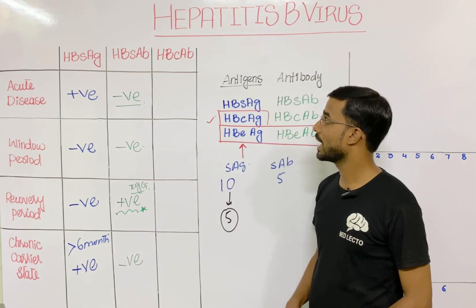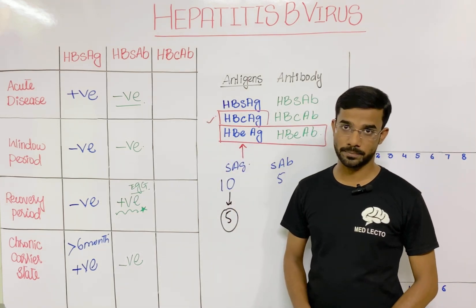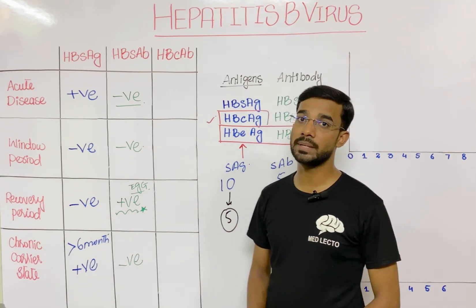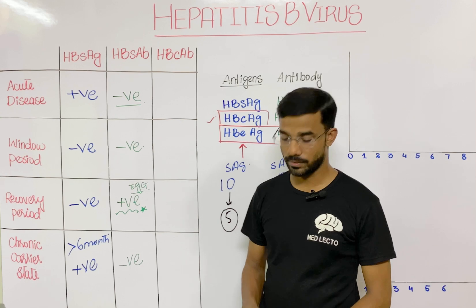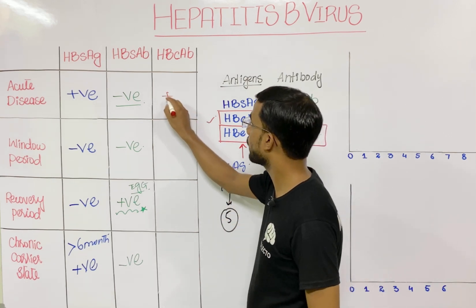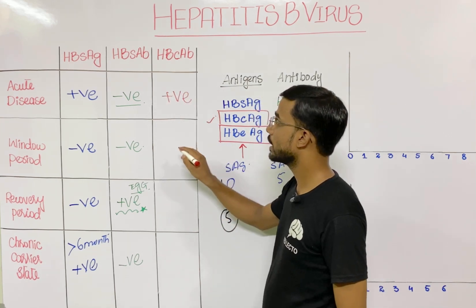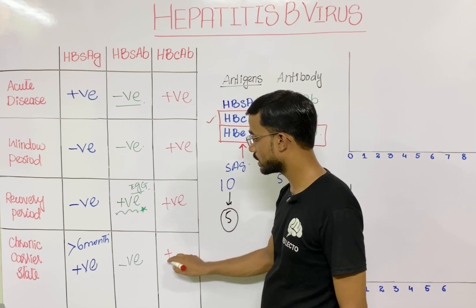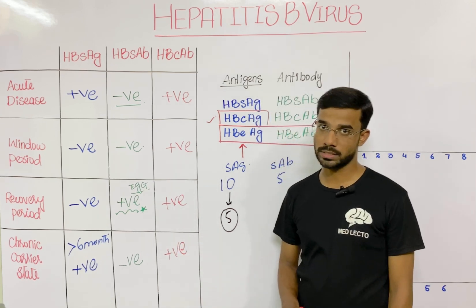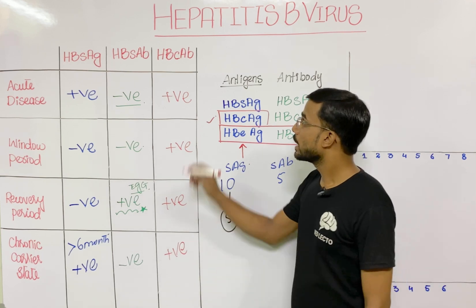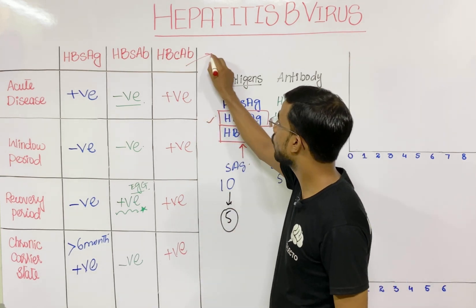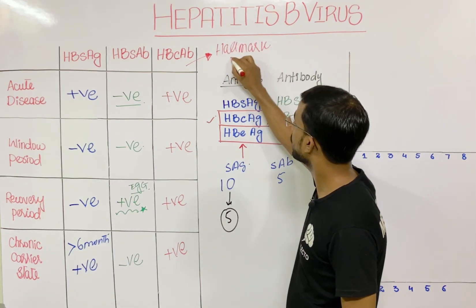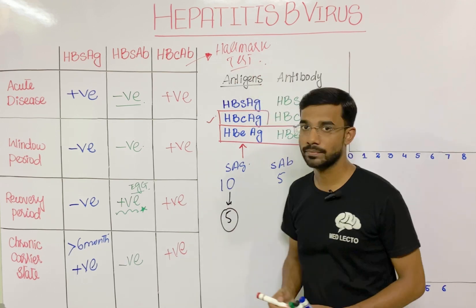The most important marker is the core antibody. Hepatitis B core antibody will always be positive in all situations — in acute disease it is positive, in the window period it is positive, in the recovery period it is positive, and in the chronic carrier state it is positive. That is why Hepatitis B core antibody is the important overall marker test of Hepatitis B virus.